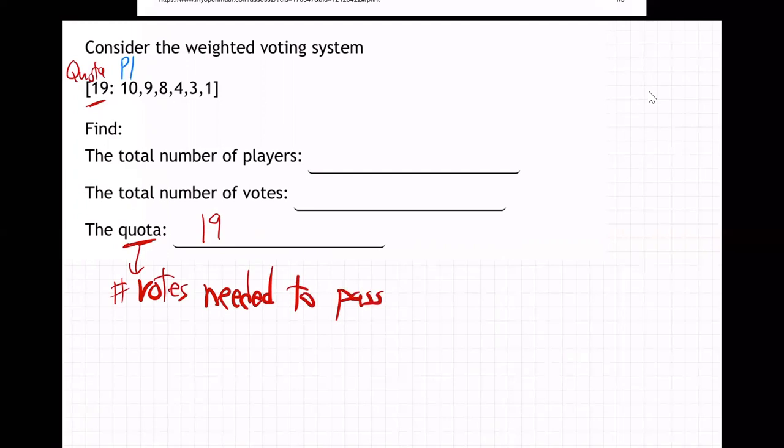Okay, and then these different players: player one, player two, player three, player four, player five, and player six. Those are the different people in play, we call them players, the different people in this system and how many votes they have. So the total number of players is six, there are six different players right here.